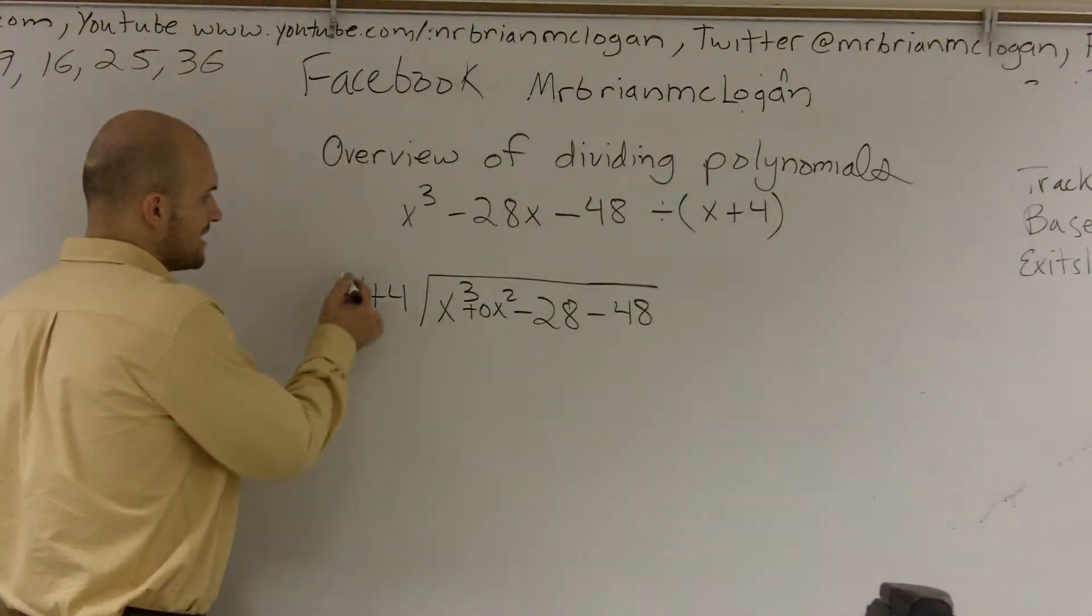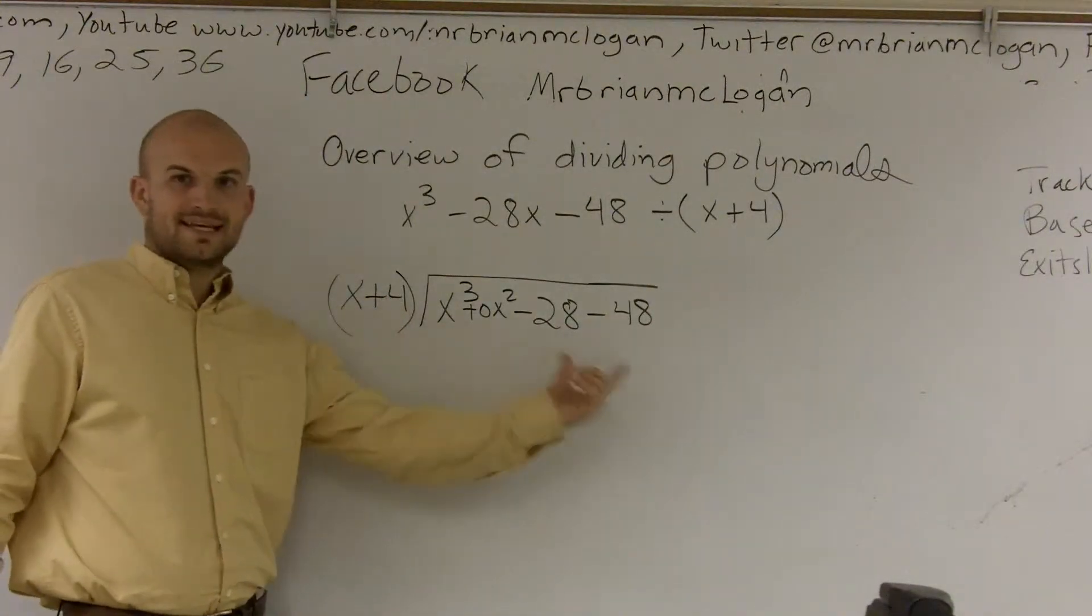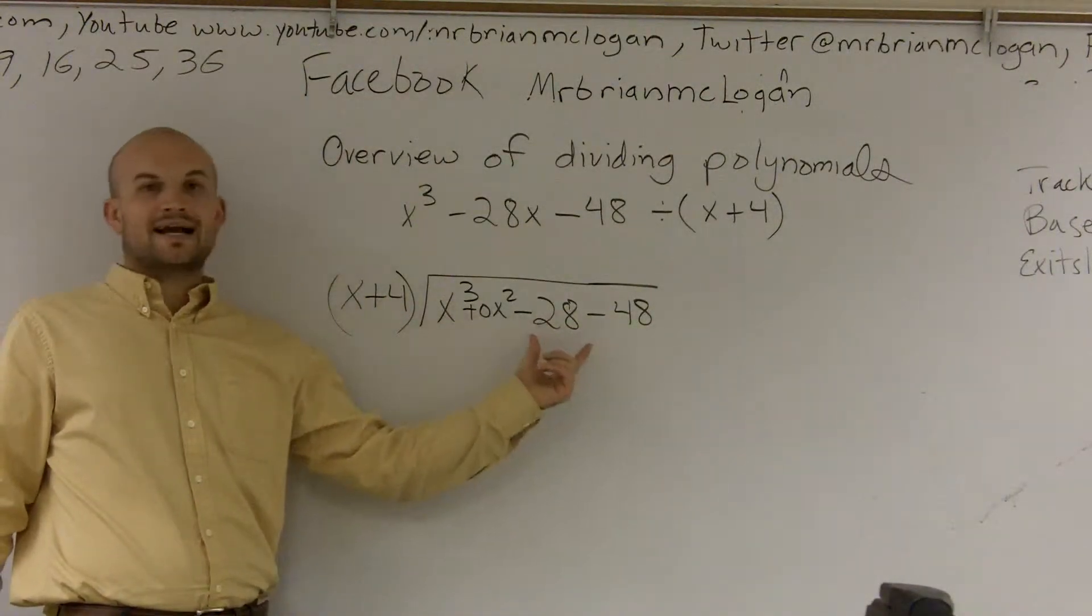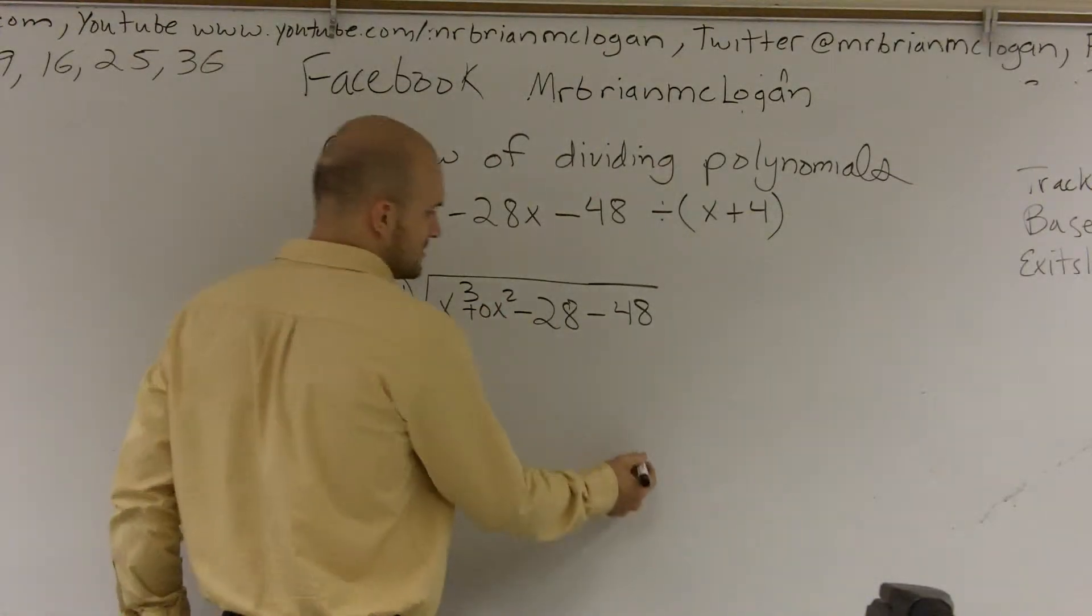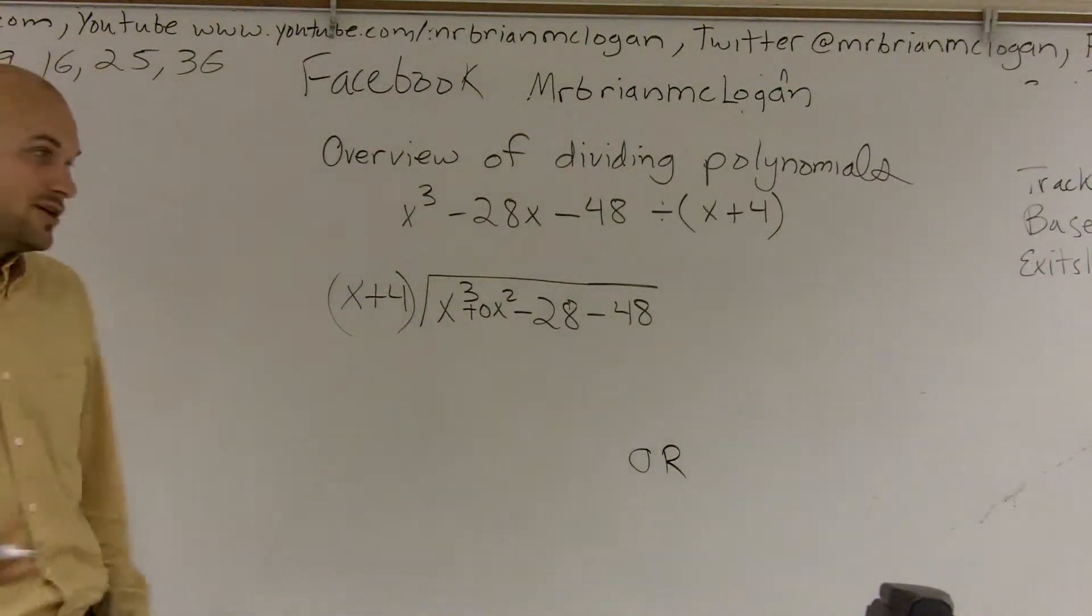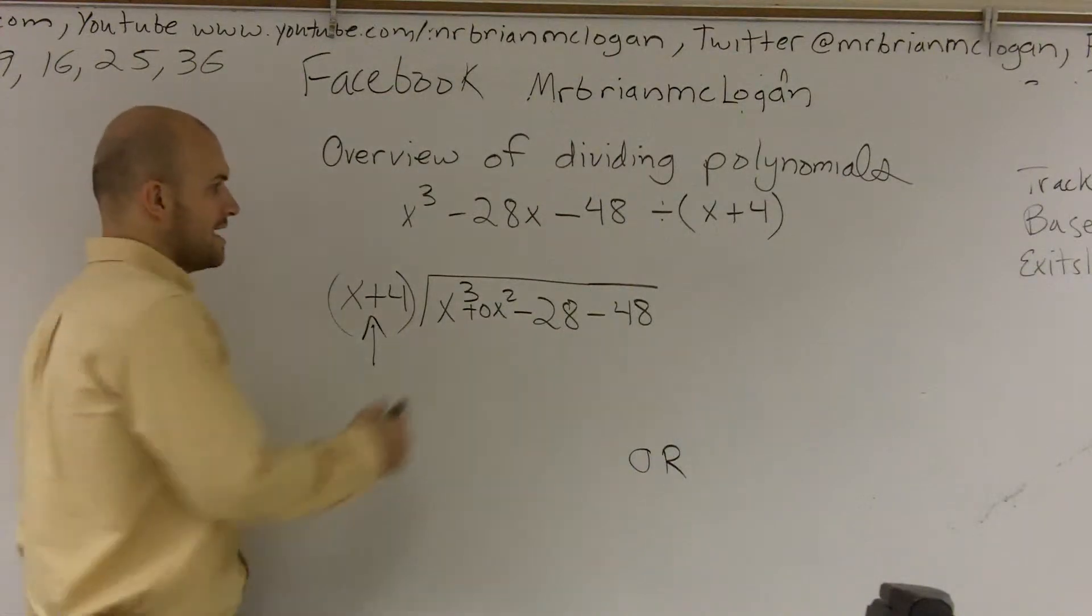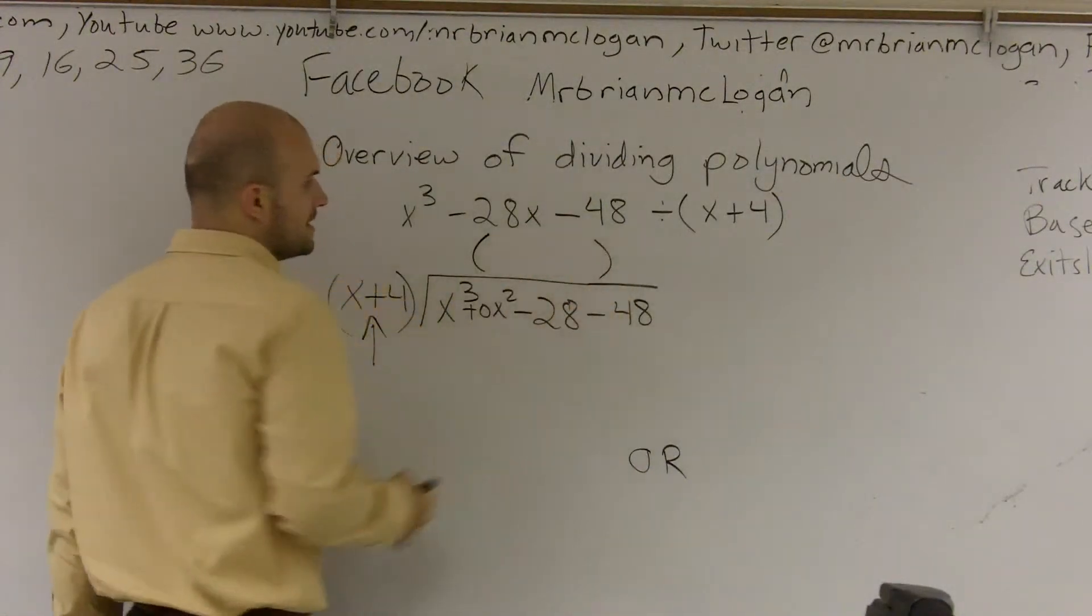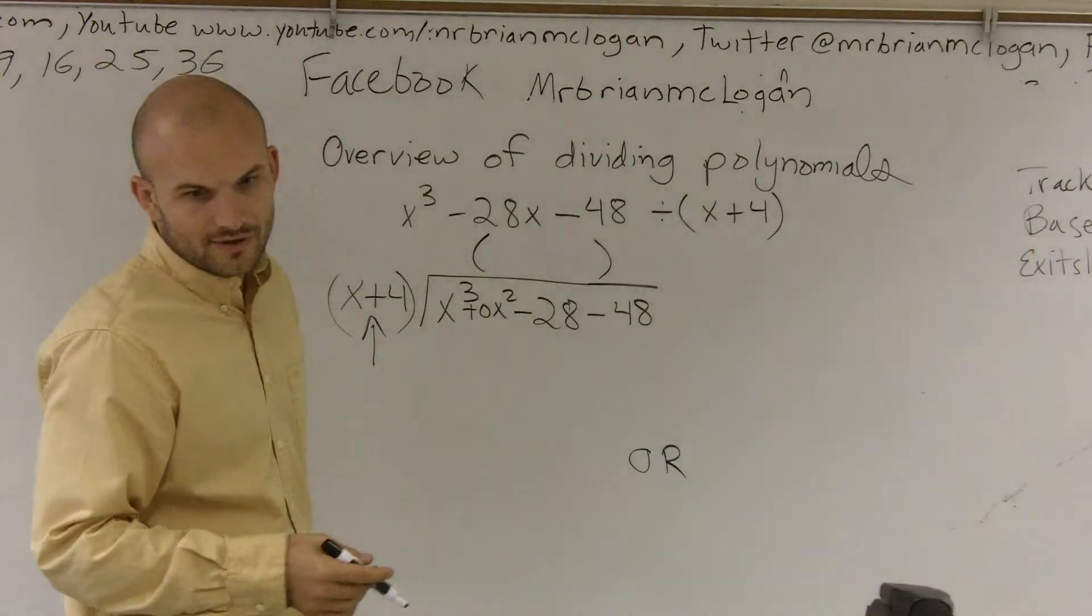Well, when we're dividing, what we're trying to do is see if this x plus 4 evenly divides into this polynomial. And when we figure that out, if we get 0 down here, and like back in the day we called it r as remainder, but if we get 0, what that tells us is this evenly goes into it. And whatever up here is our answer, and I believe in this one I didn't even know the answer.